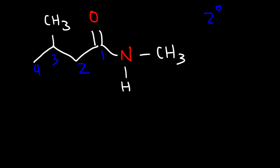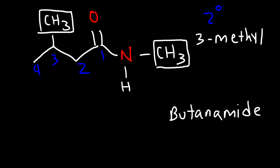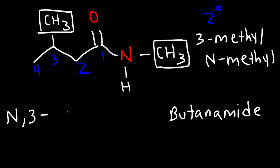Let's count the longest chain associated with the amide. We have a four-carbon chain, so instead of saying butane, let's drop off the E and replace it with amide — giving us butanamide. We have a methyl group on carbon three, so that's 3-methyl, and we also have a methyl group attached to the nitrogen atom, so that's N-methyl. Since we have two methyl groups we say dimethyl, so this is N,3-dimethylbutanamide.